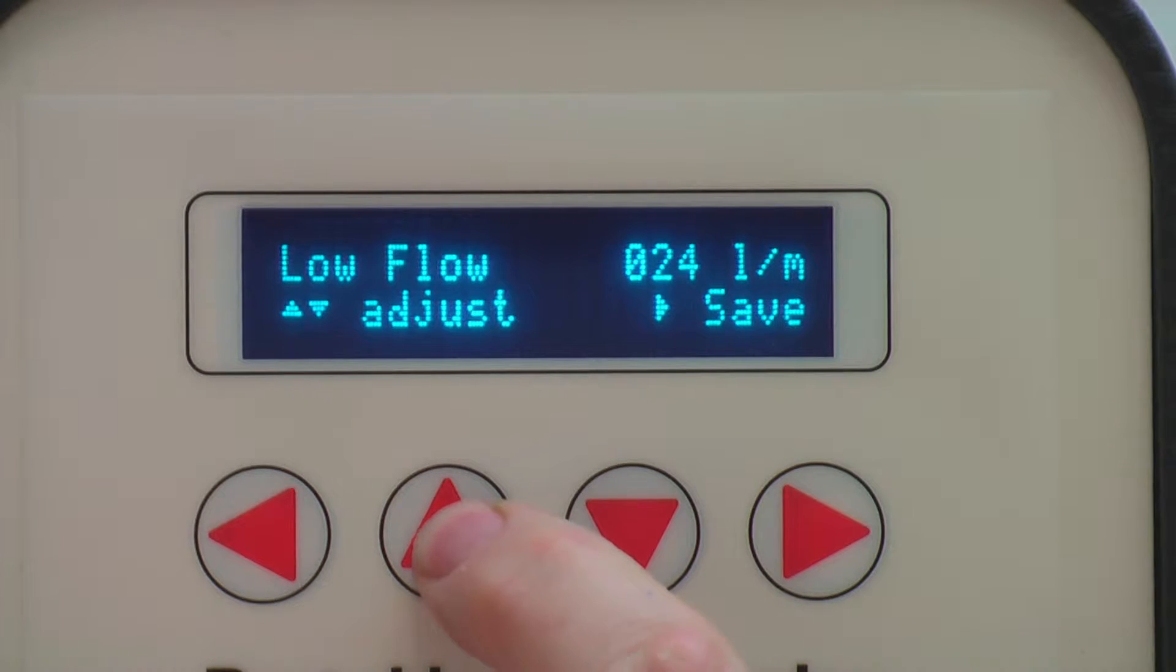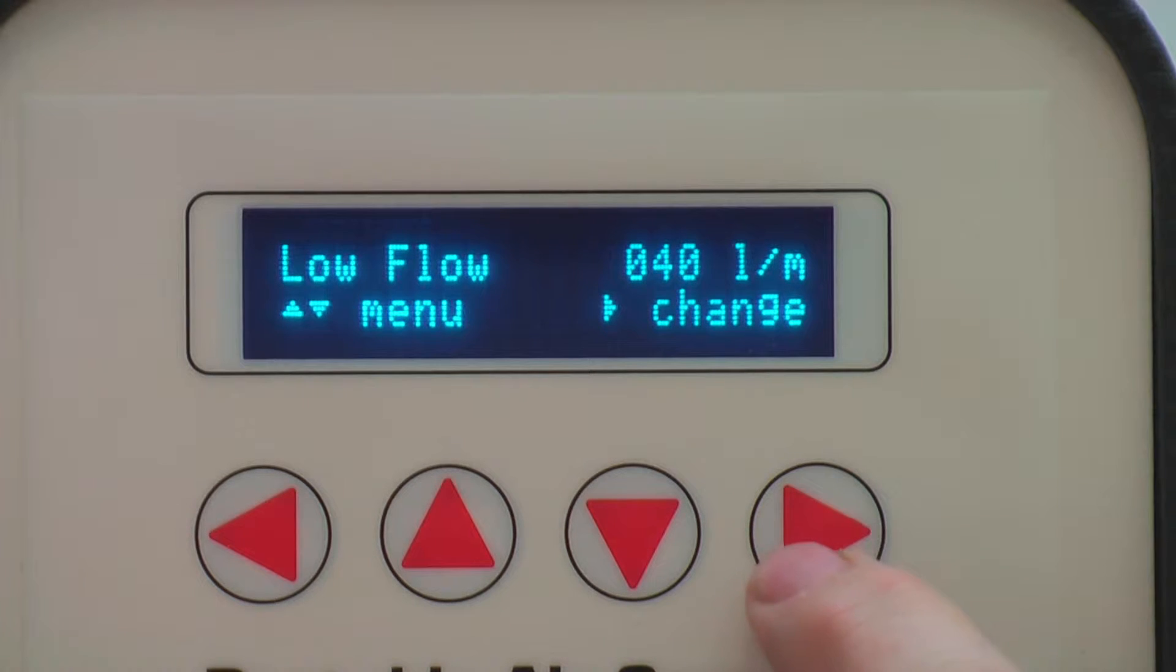Pressing down will take you to the low flow configuration. Low flow is the lowest flow allowed before an alarm is triggered and the sample is stopped. Press right to access the settings. Pressing up or down will allow you to increase or decrease your low flow set point.